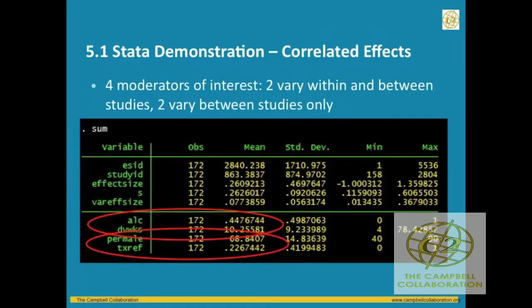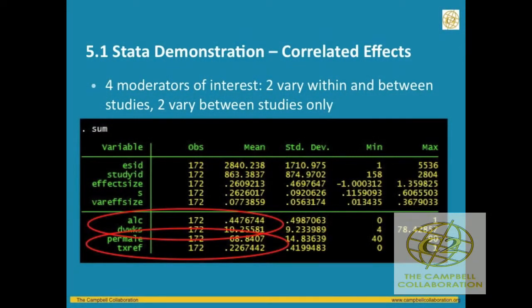The ALK variable varies within and between studies because some studies will have alcohol and mixed outcomes, while others may have all marijuana or all alcohol outcomes. The same applies to DV_weeks. We also have two covariates that only vary between studies: the gender composition of the sample — the percentage of boys — which only varies across studies, and a dummy indicator for whether participants were referred from a prior level of treatment. Those last two only vary between studies.